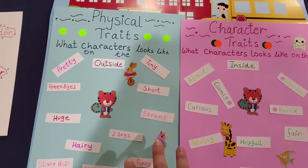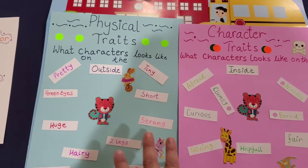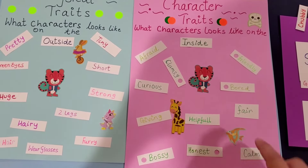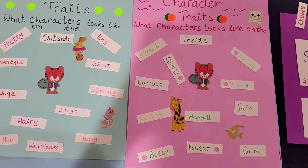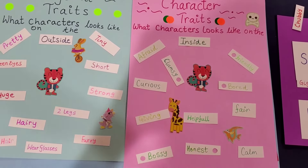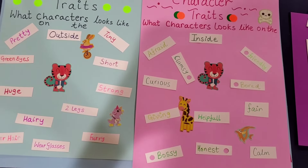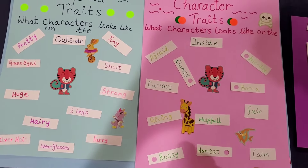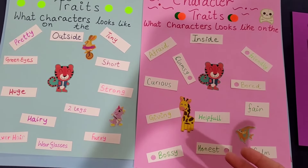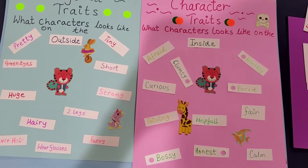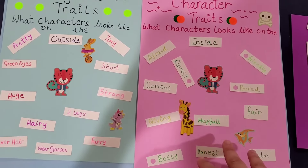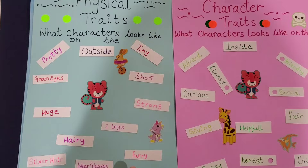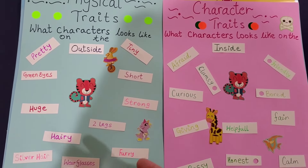These outside characteristics are very important when explaining or writing about somebody. Now come character traits — what a character looks like on the inside. Inside traits are not something you see; they're something you feel and notice once you're in interaction with someone, and they emerge over time. Helpful, honest, bossy, giving, friendly, afraid, clumsy, fair, calm — these are all adjectives people use to describe a person's inside character traits.